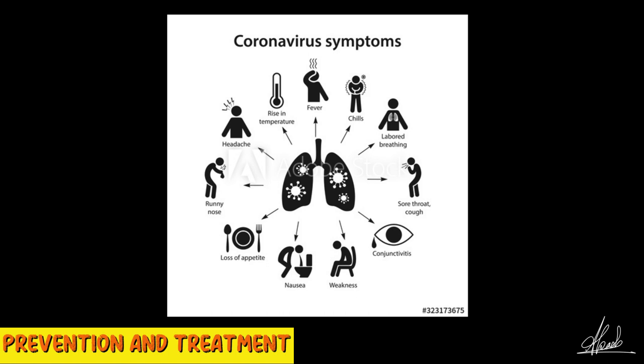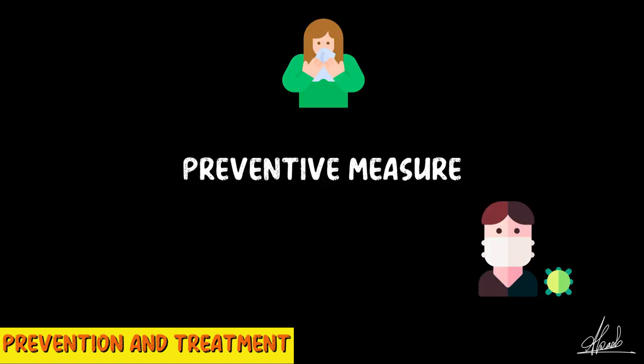Some good preventive practices include: not touching our eyes, nose, and mouth as frequently as we do, since those are the major routes of infection. Washing hands frequently with proper hand wash is also important. Covering the nose and mouth while sneezing or coughing prevents aerosolized virus particles from traveling to other persons. If someone has fever, they should wear a mask, and others should maintain a distance of about one meter from the sick person.